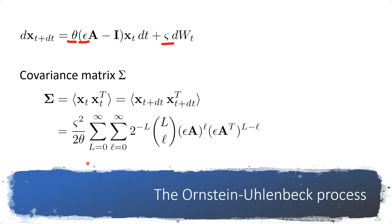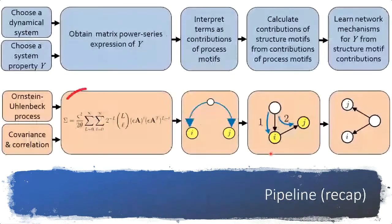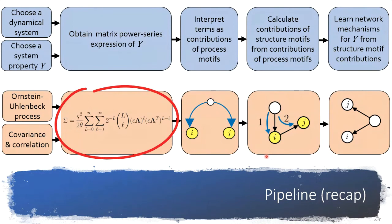For the Ornstein-Uhlenbeck process one can derive the covariance matrix at steady state analytically, ending up with an expression that sums over two indices L and l. Each term in the summation is a product of matrices. We can get a similar expression for correlation as well — the equation is longer and requires tracking more summation indices, but the idea is essentially the same.